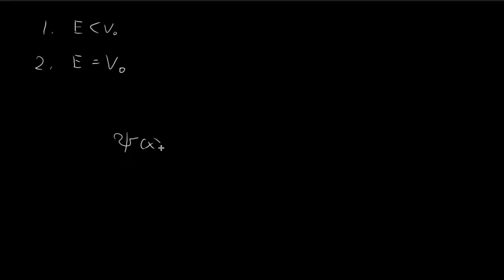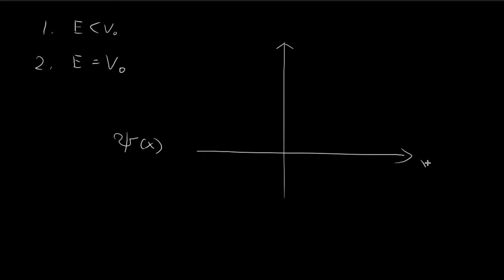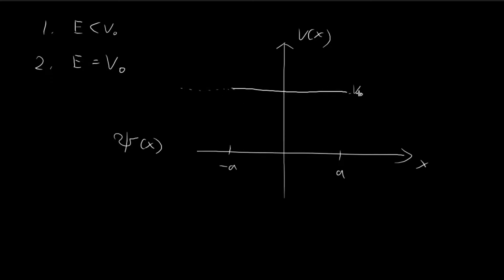First of all, we need to find what ψ(x) is. Our potential in this case is the same as before: V(x) equals V₀ from negative a to positive a, and zero everywhere else. Our energy level is precisely V₀ itself, and so now we need to find ψ(x) for such a scenario.